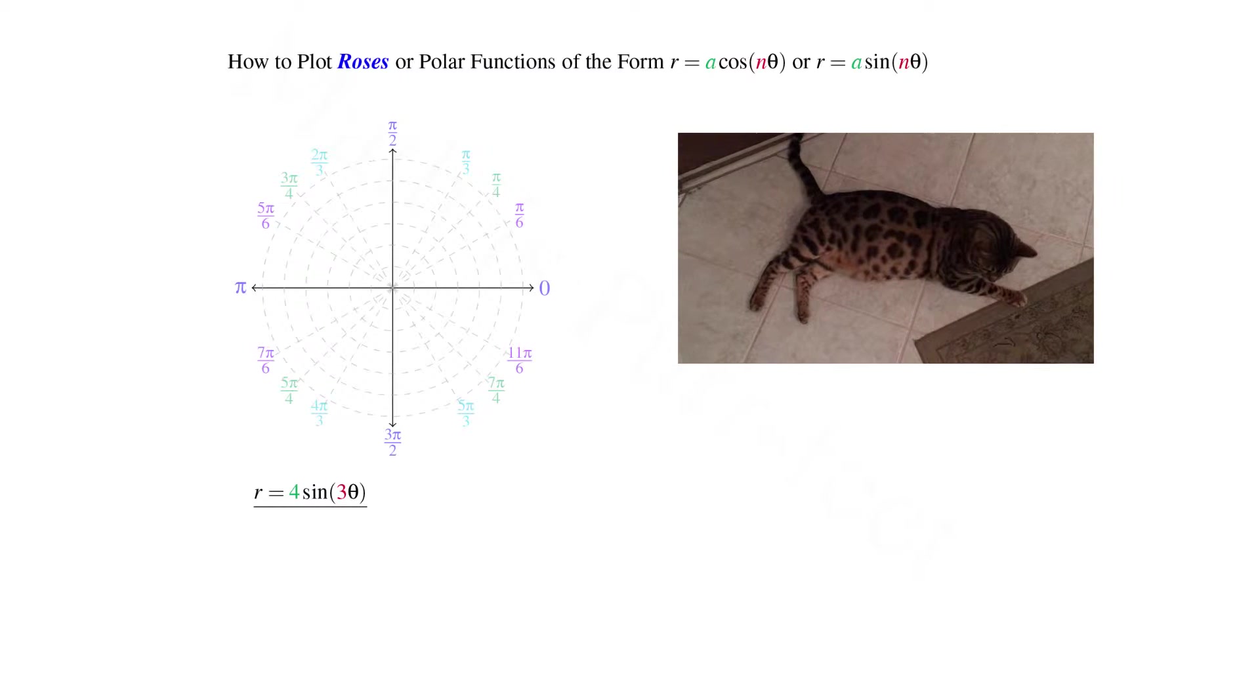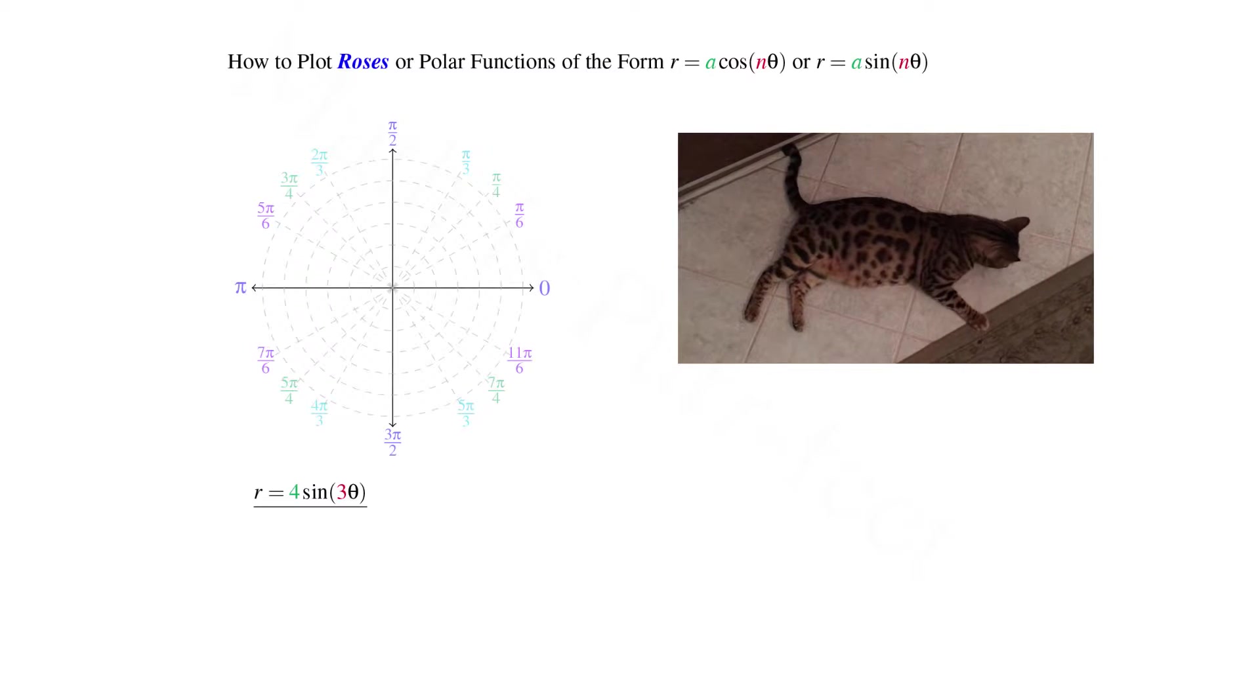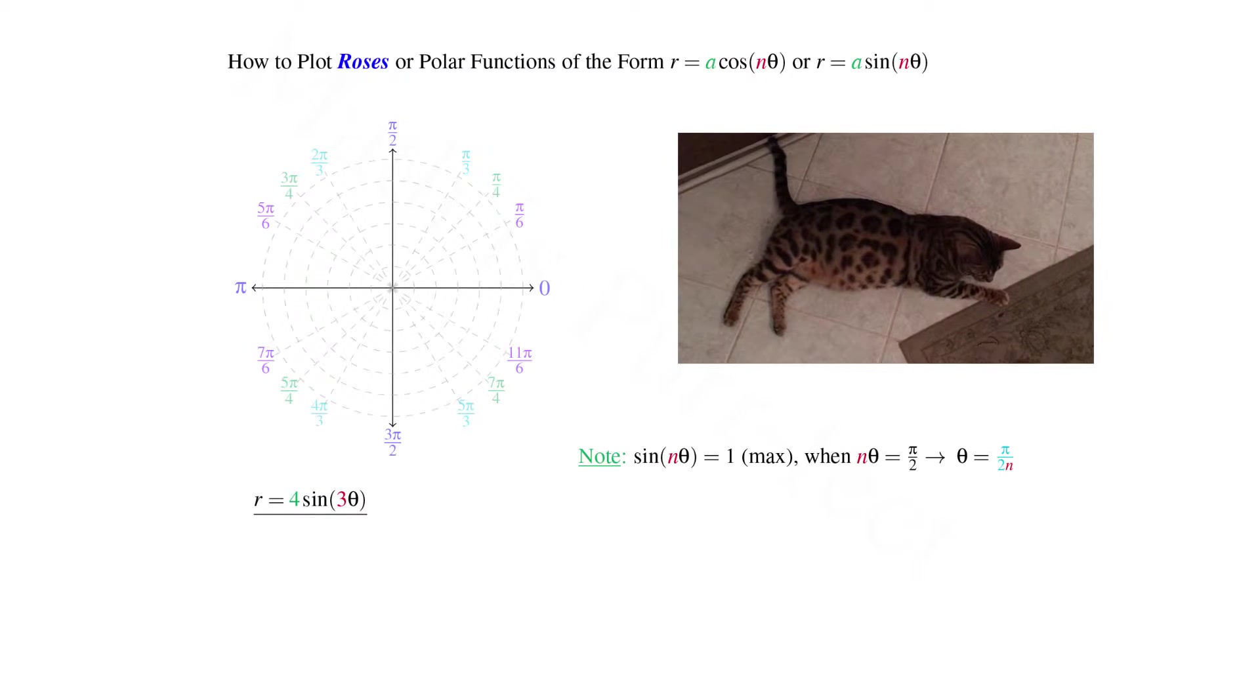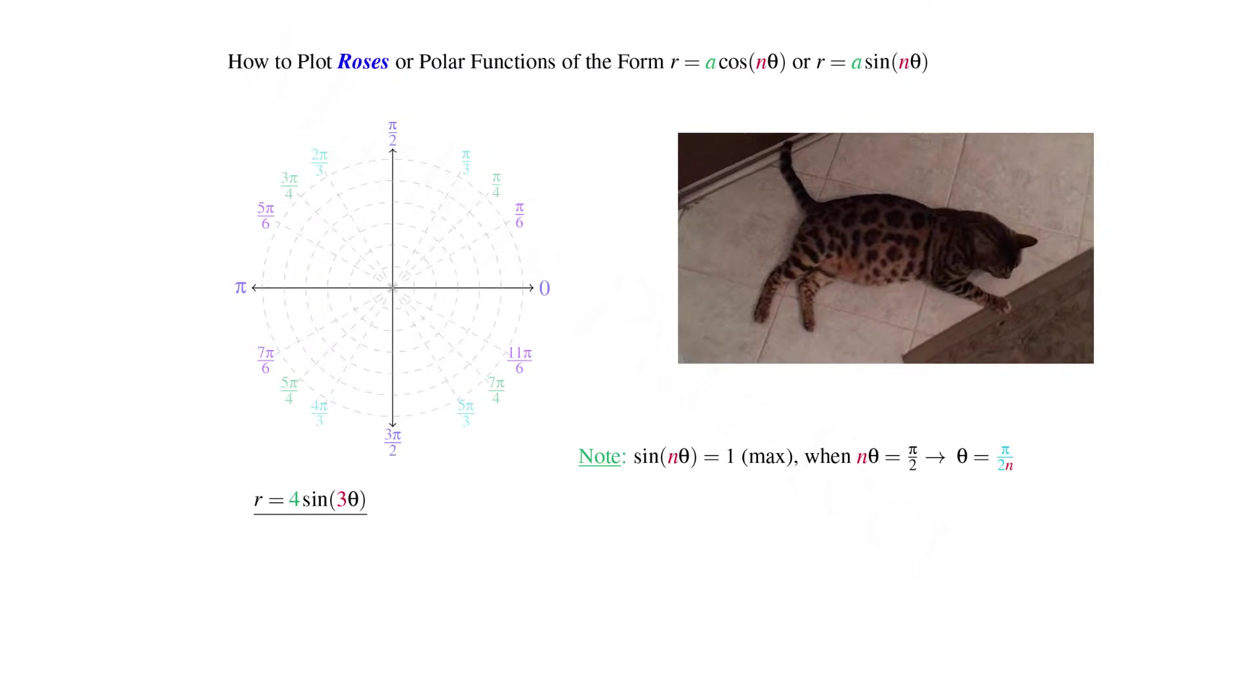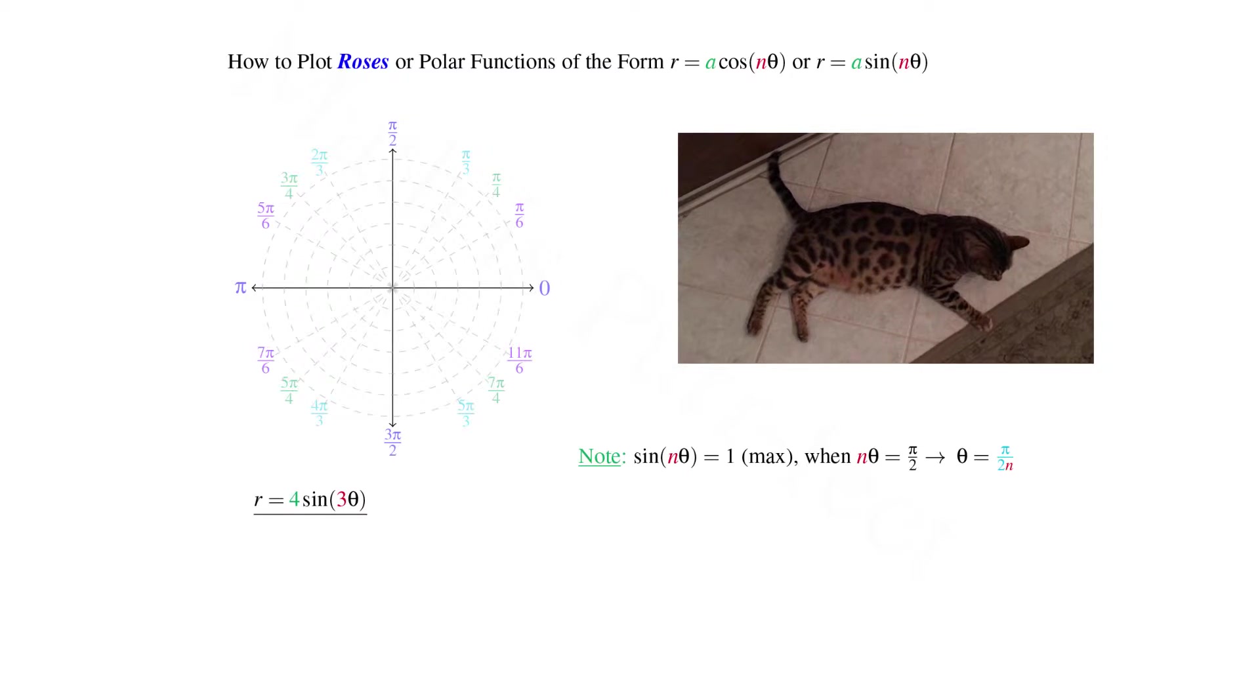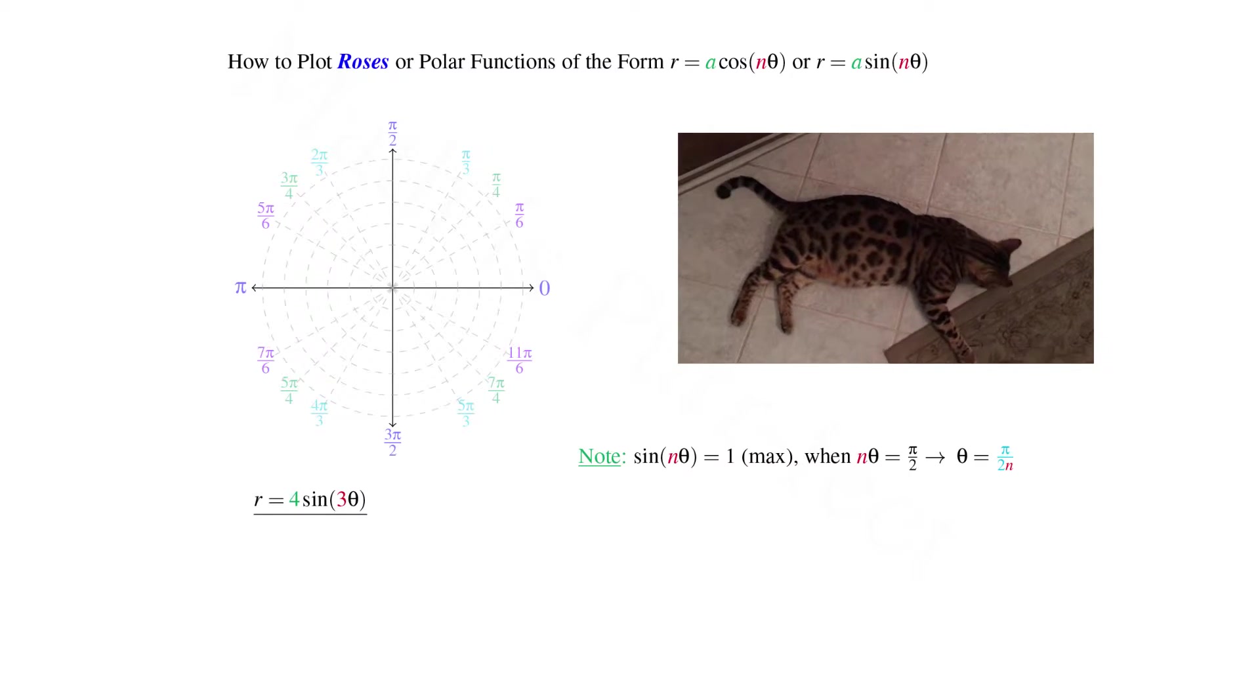Now let's consider the polar function given by r = 4sin(3θ). We note that sin(nθ) is maximized at 1, that is, when the argument nθ equals π/2, in which case θ will be at π/(2n).